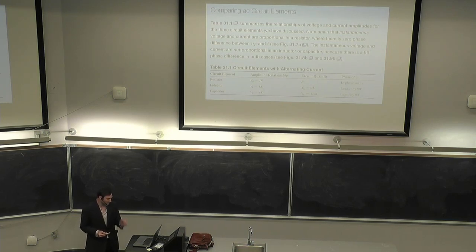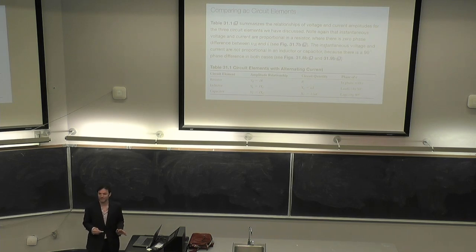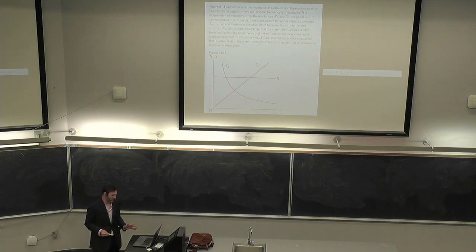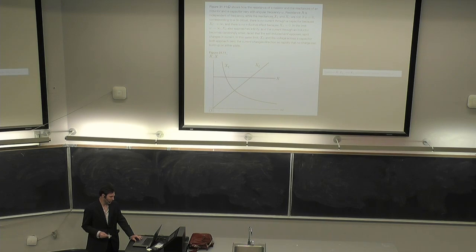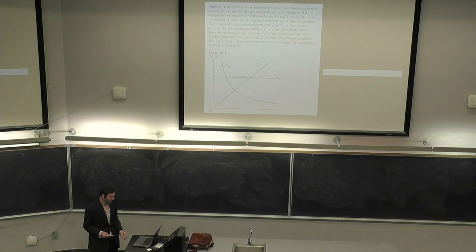Inductors, capacitors, and resistors. Note that the instantaneous voltage and current are proportional in a resistor, where there's zero phase difference between V_R and I. They are not proportional in an inductor or capacitor because there's a 90-degree phase difference — as we discussed in those phasor diagrams. Here's a figure showing resistance of a resistor and reactances of an inductor and capacitor versus angular frequency ω. Resistance is independent of frequency while X_L and X_C are not — resistance is just a constant but the reactances of the inductor and capacitor vary.